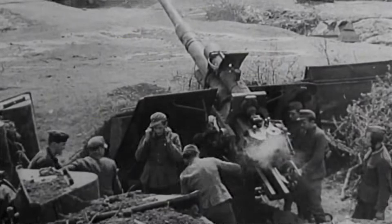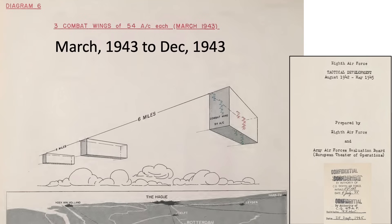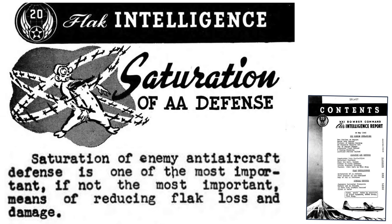One saturation technique is to reduce the distance between the bomber formations, or trail. This page from a 1945 Army Air Force's Evaluation Board document titled 8th Air Force Tactical Development illustrates a six-mile trail distance of the 54 Bomber Combat Wing that was active during most of 1943. Saturation of the flak batteries is one of the most important, if not the most important, countermeasure tactics bombers can take to reduce losses and damage.